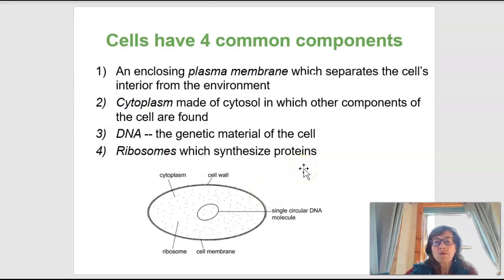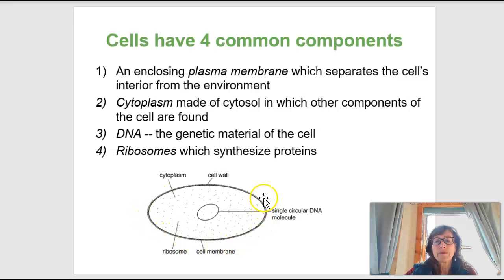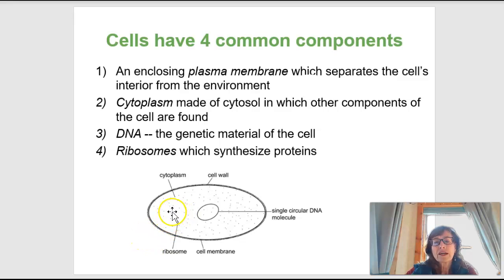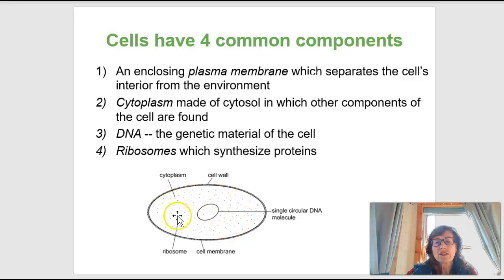All cells, whether prokaryotic or eukaryotic, have four common components. First, they have a membrane surrounding them — called a plasma membrane — which separates the things cells need for growth and life from the external environment. Second, they have cytoplasm, made of something called cytosol, where other things are dissolved in liquid. Chemical reactions happen within these watery environments known as cytoplasm.